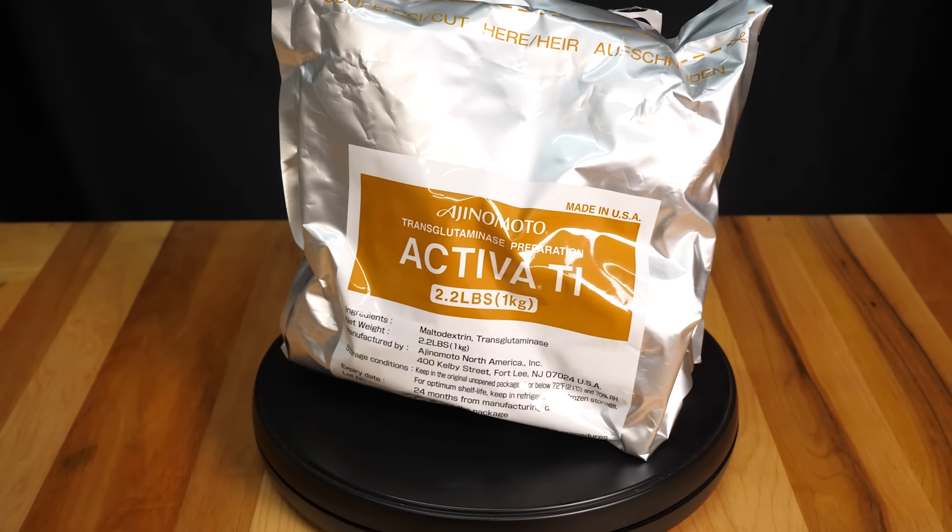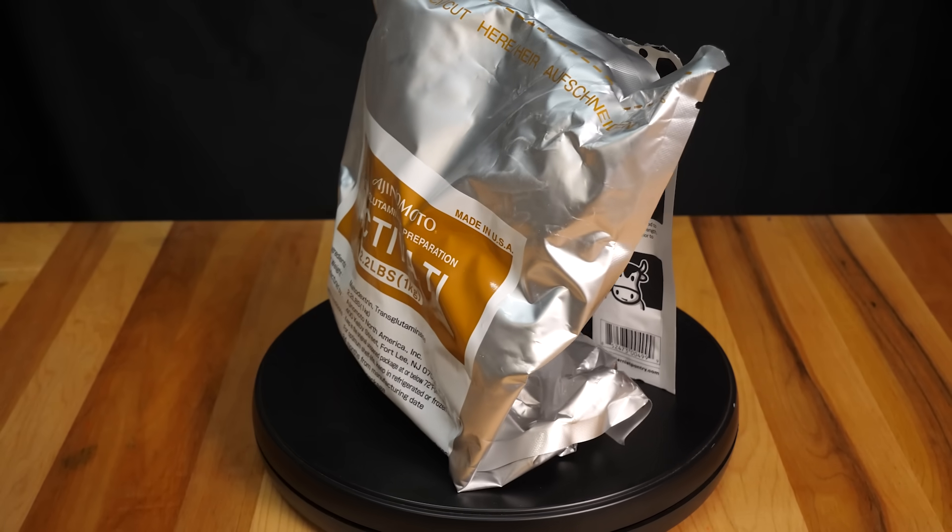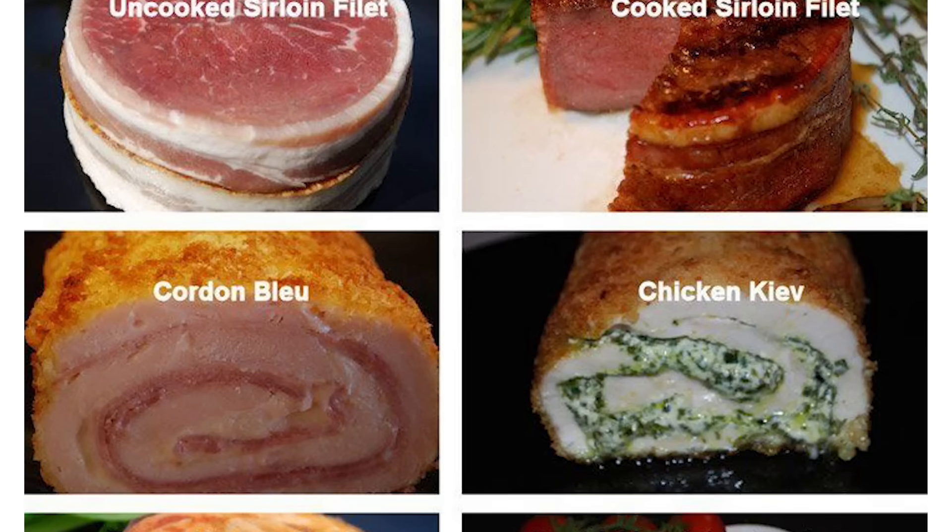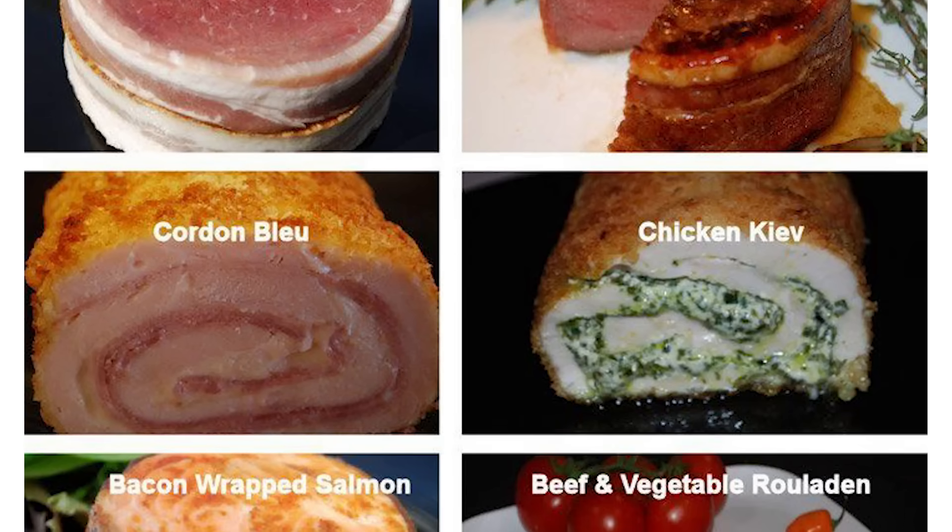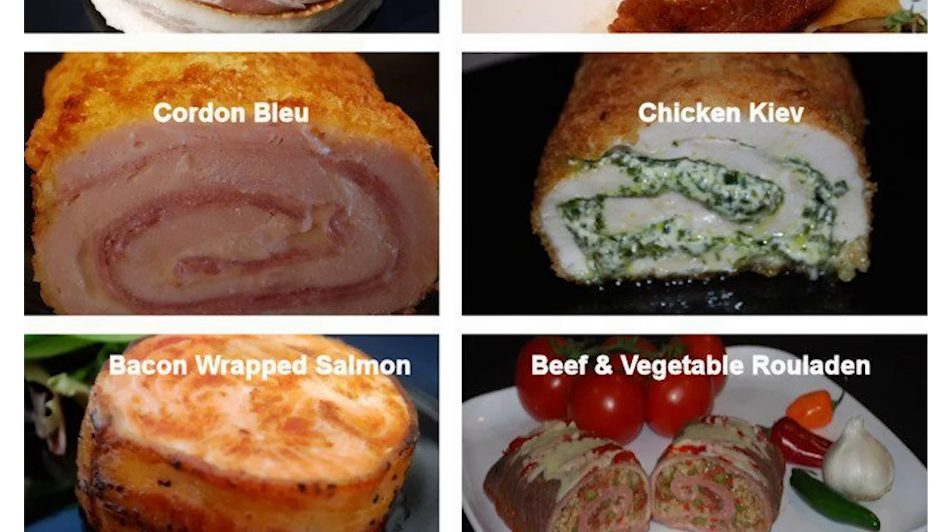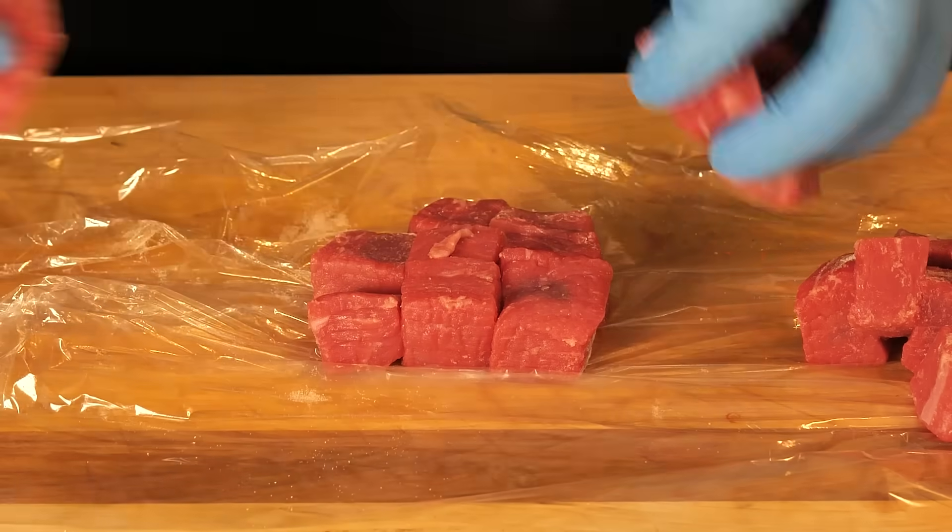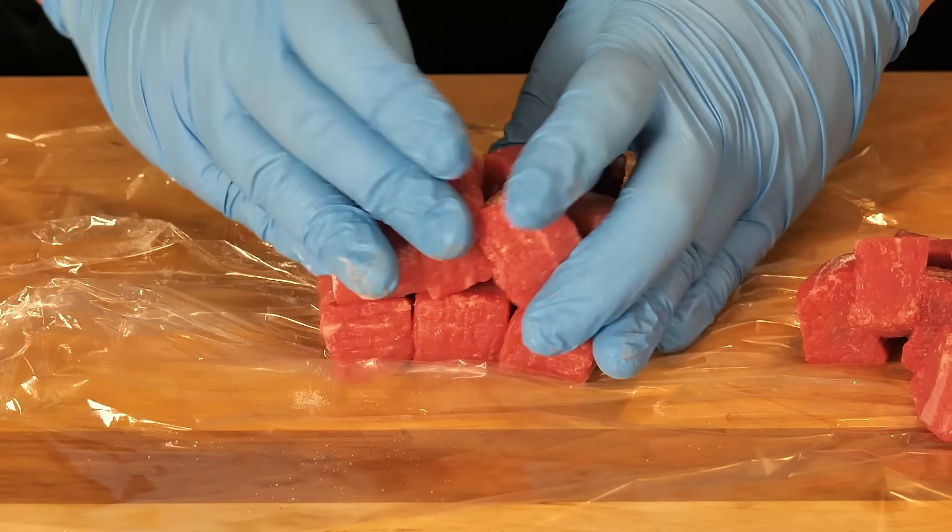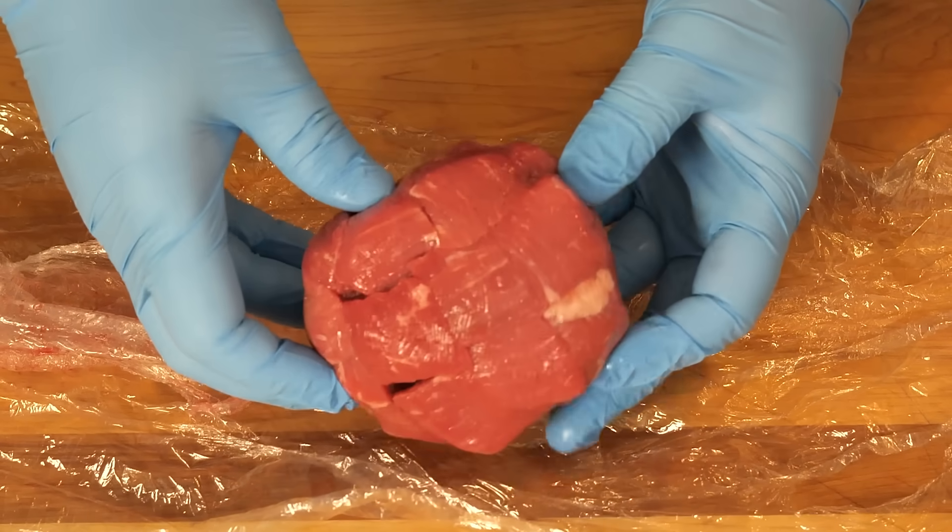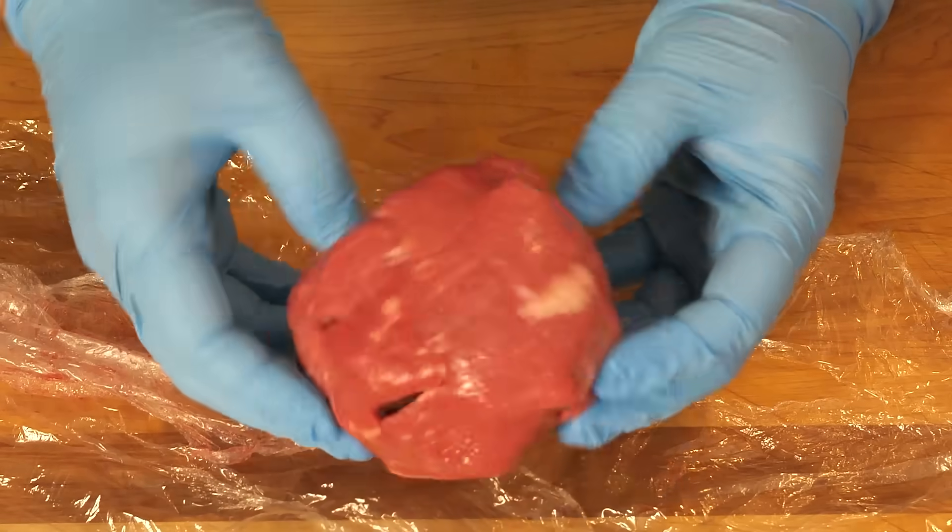There are a lot of classy ways to use this enzyme, and some sketchy ways too. The classy ways make nice fillets out of things that you can't usually make a fillet out of, like salmon. Or to make bacon-wrapped rounds that don't fall apart, or make a perfect terrine. The sketchy uses, though, are gluing cheap cuts of meat together and trying to pass them off as a more expensive cut. Like all tools, it's how you use it that matters.